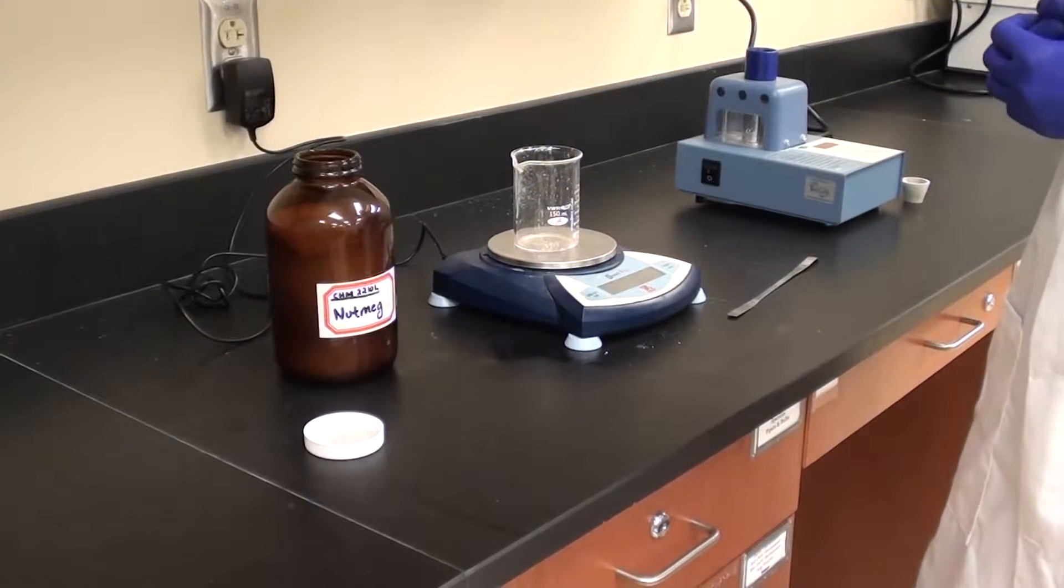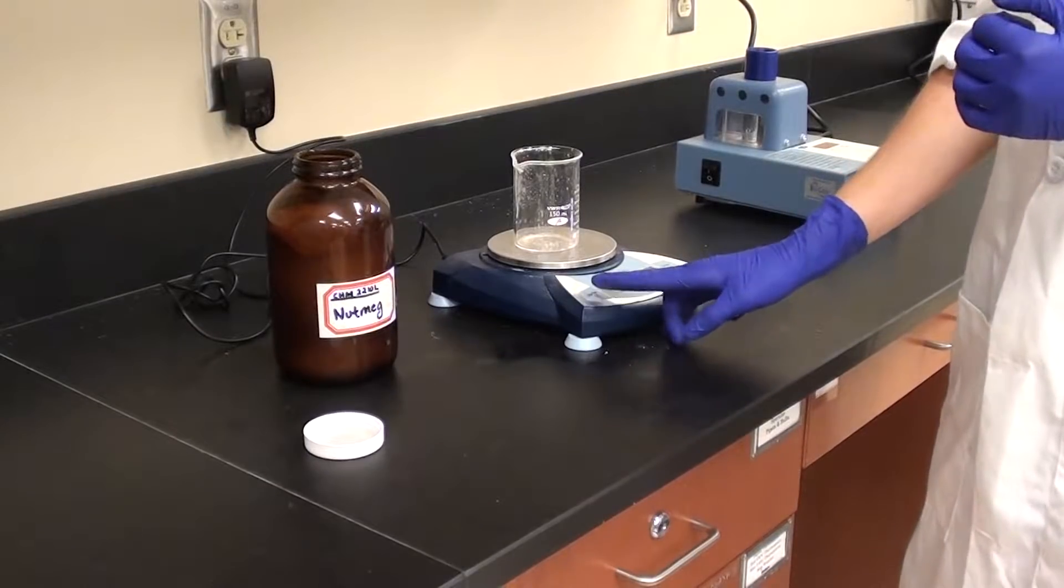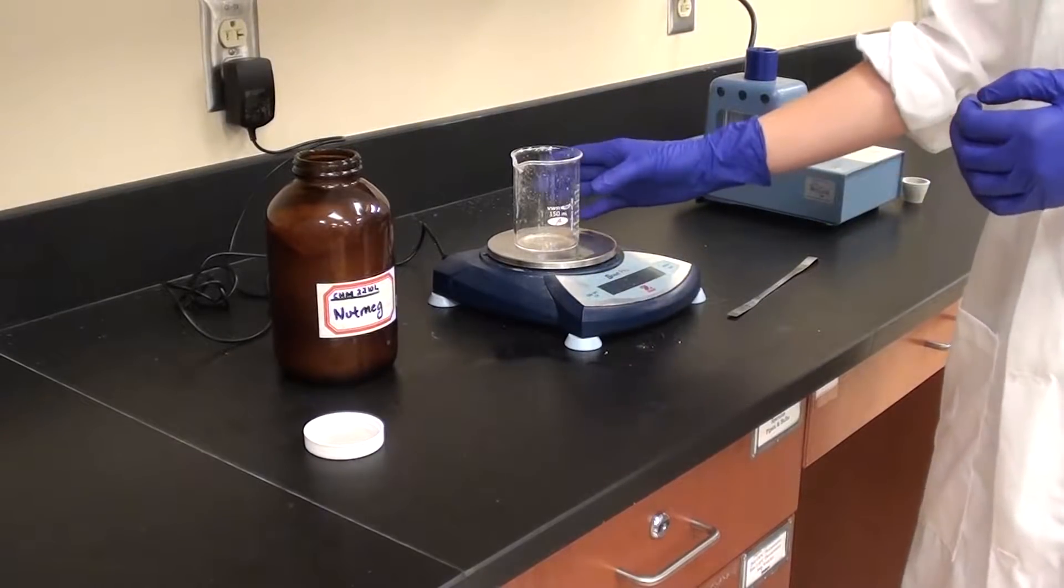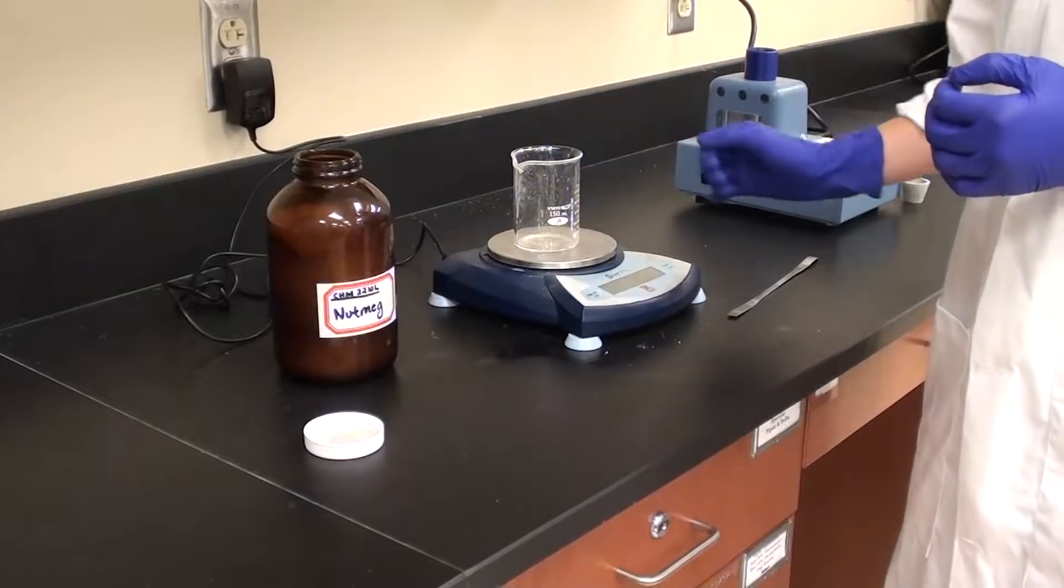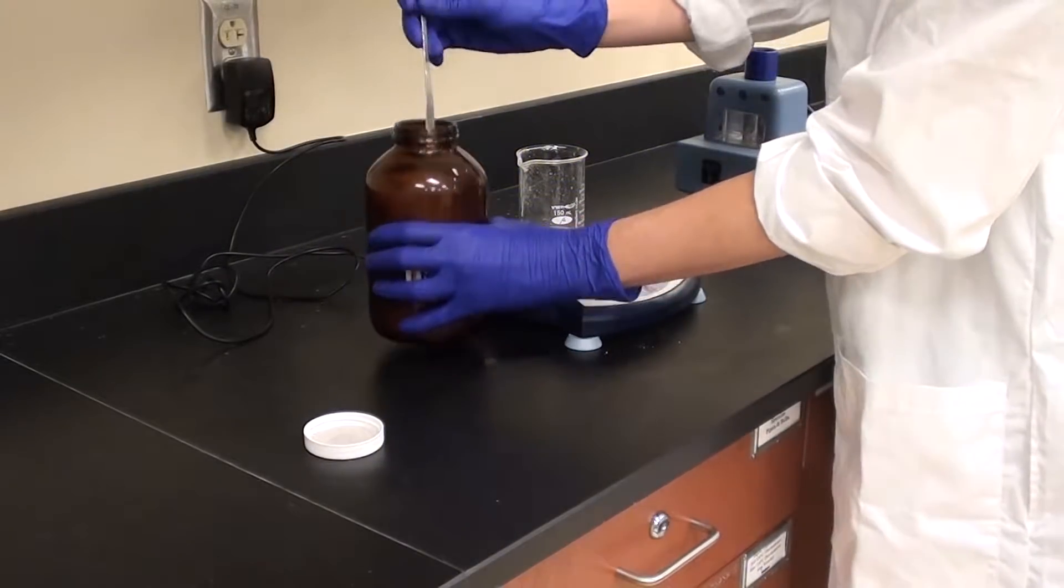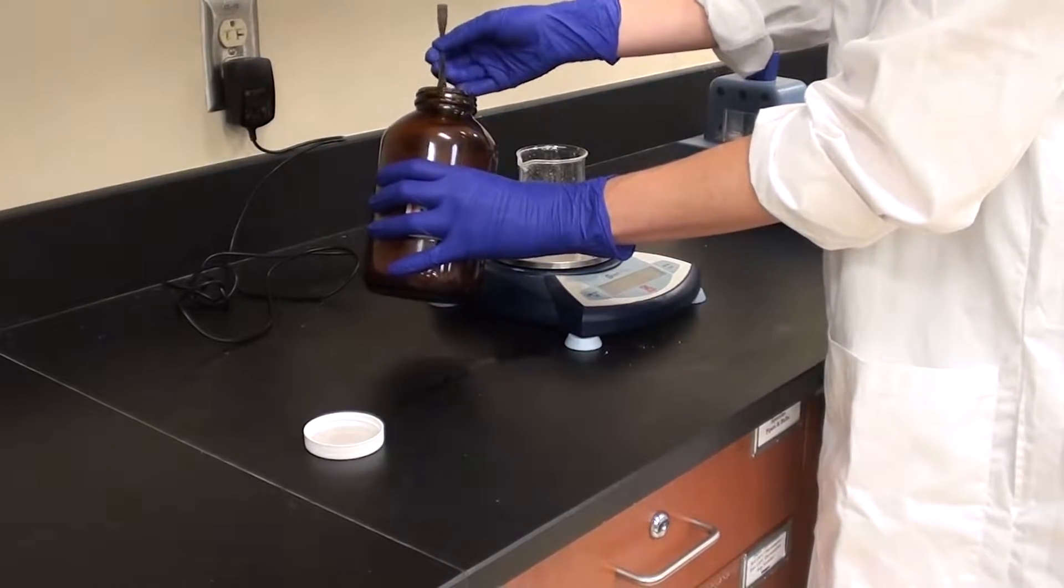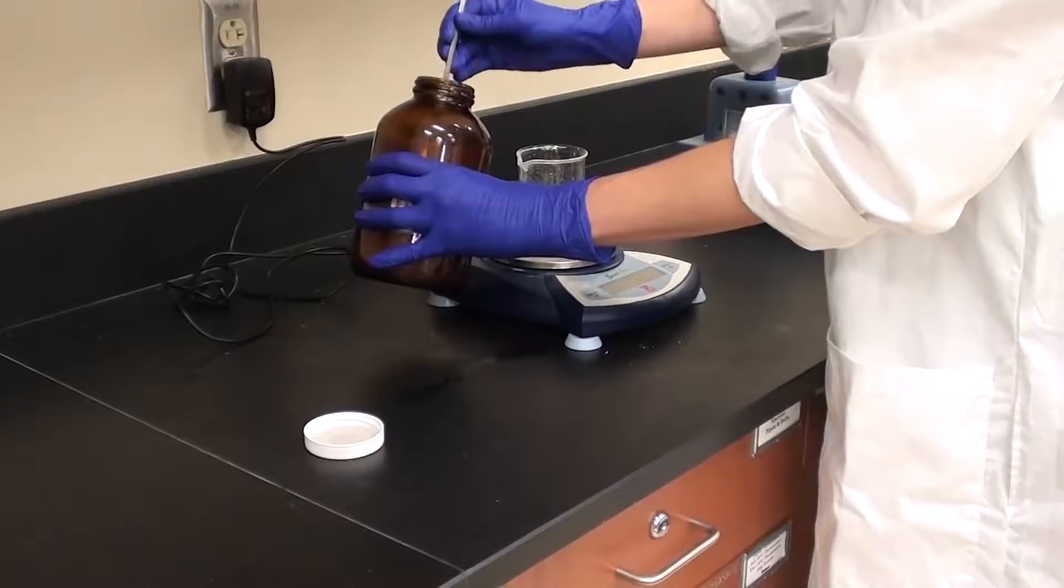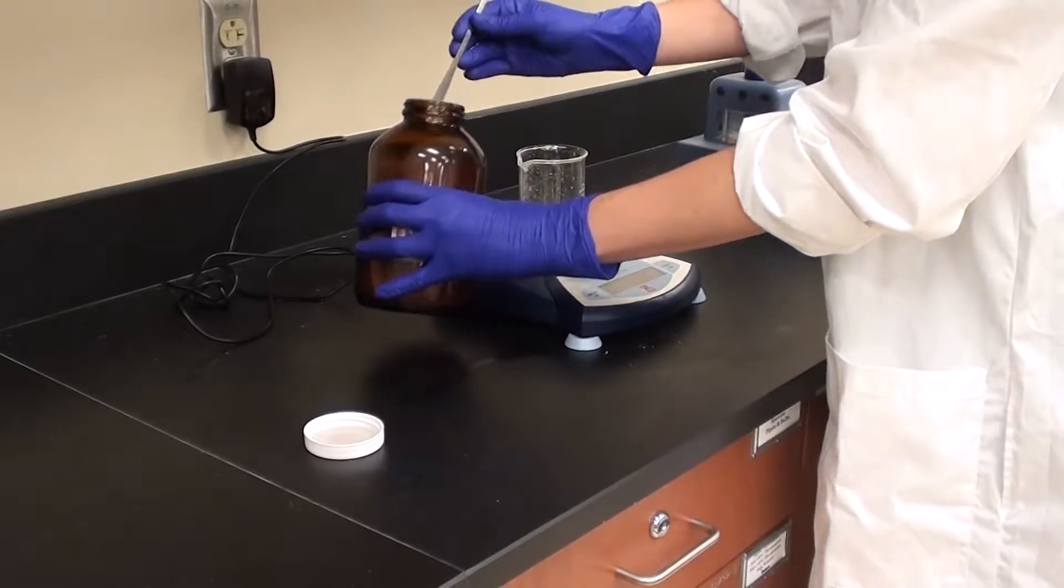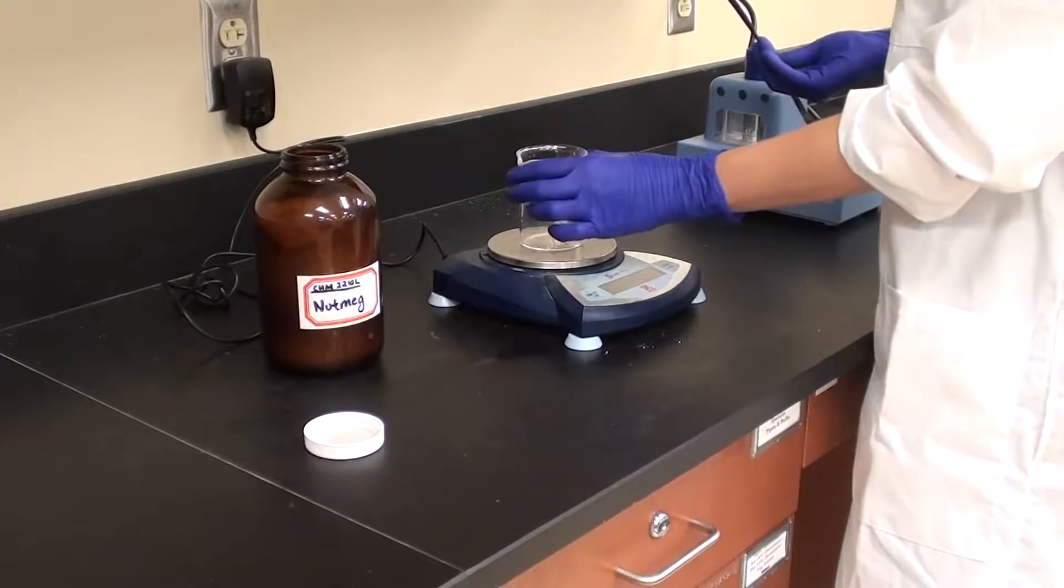Kristin is weighing out the nutmeg. She's going to tare the beaker there. Now what she isn't going to do is pretend to do what you shouldn't do. This is what we don't want to see - we don't want to see the nutmeg being added while it's on the balance, because that's going to damage the balance. Stuff's going to end up on the balance and underneath the pan.